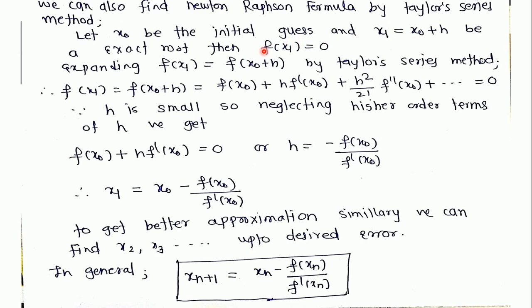If we are assuming that this is the exact root then the value of function at this point is 0. We are expanding the Taylor series at this point. Therefore f(x1) equals f(x0 plus h) which equals f(x0) plus h times f'(x0) plus h square upon 2 factorial times f''(x0) plus... equals 0.